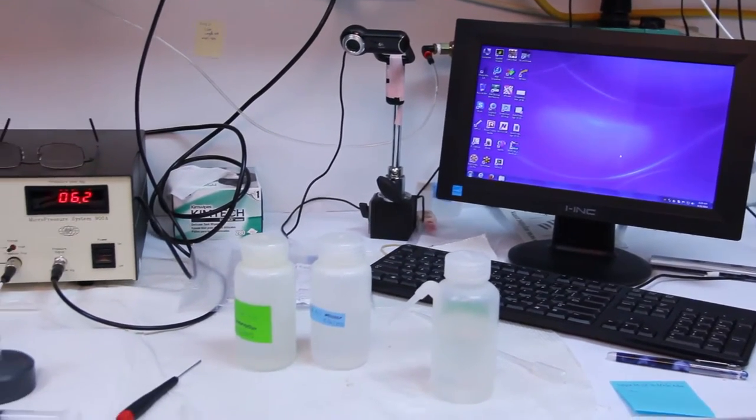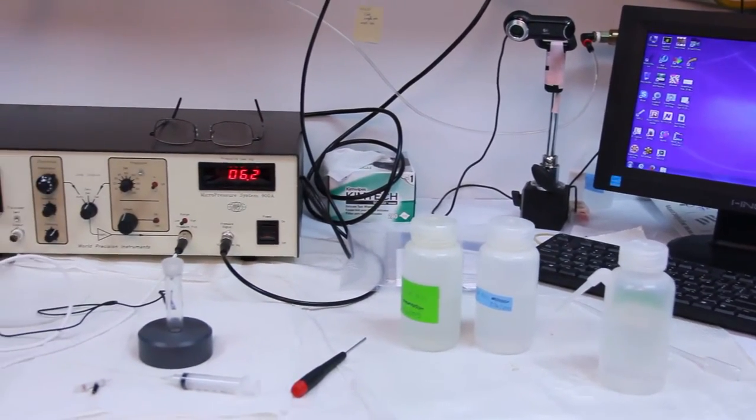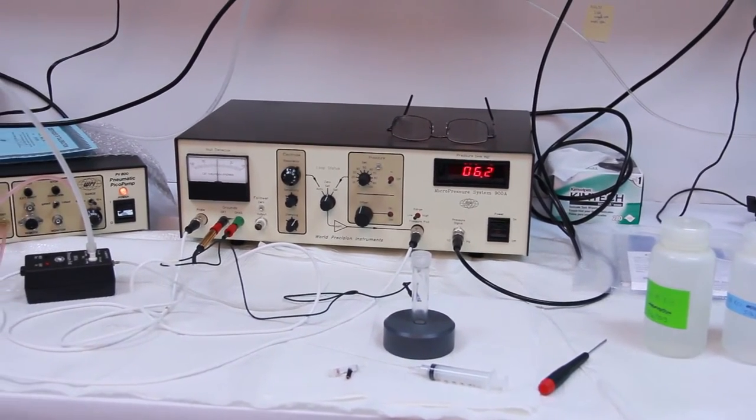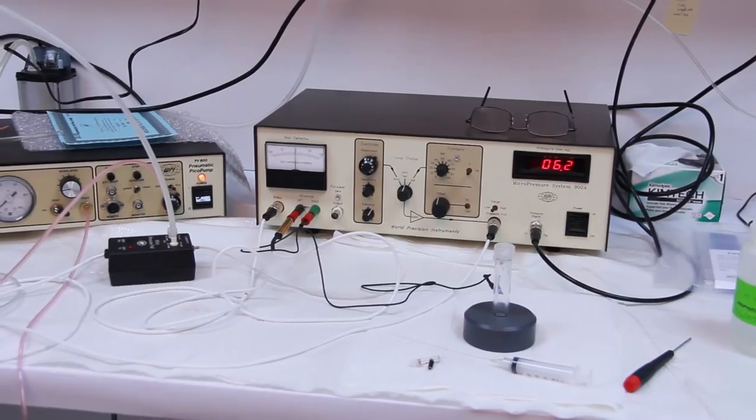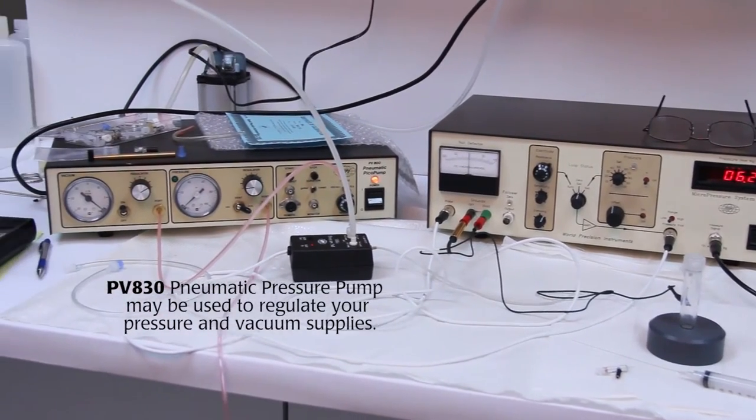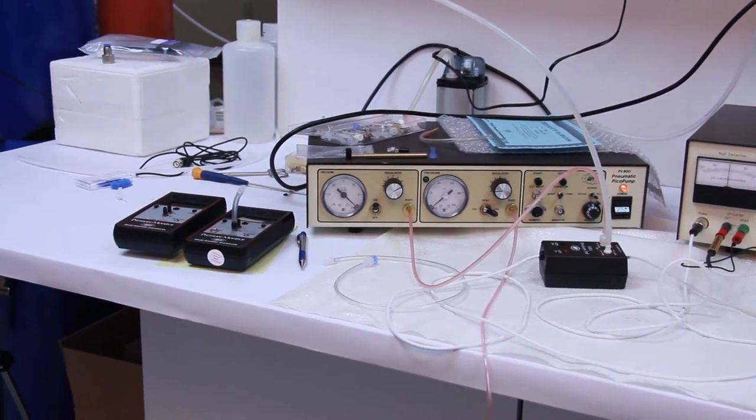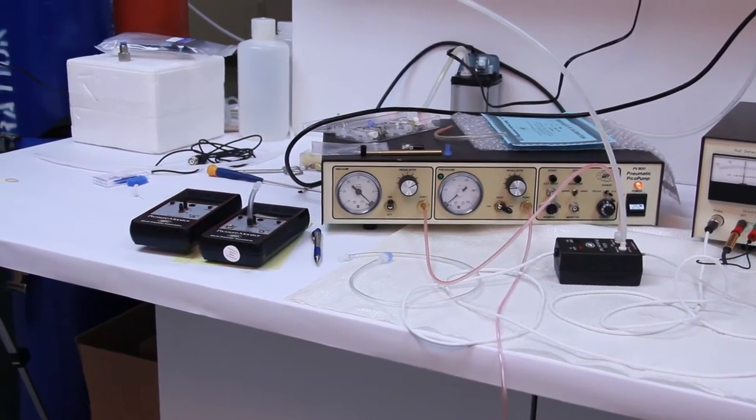The pressure reading appears on the front panel display and via the BNC recorder output. Because the piezoelectric pressure controller uses external pressure and vacuum sources, pressures lower than minus 200 to greater than plus 400 millimeters of mercury can be quickly and accurately measured at the microelectrode tip.